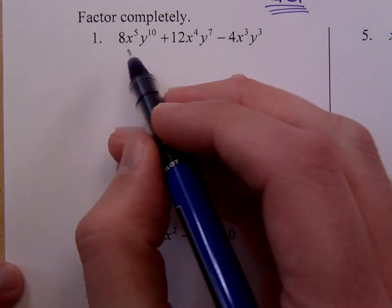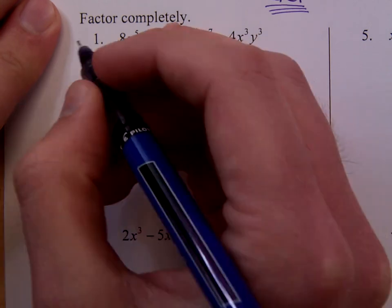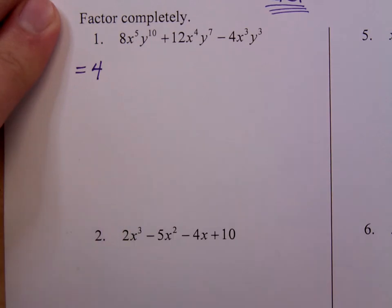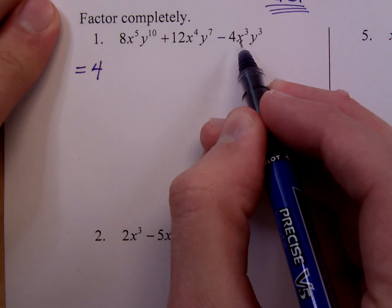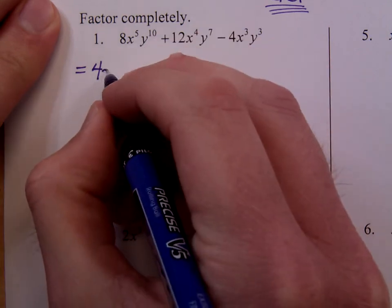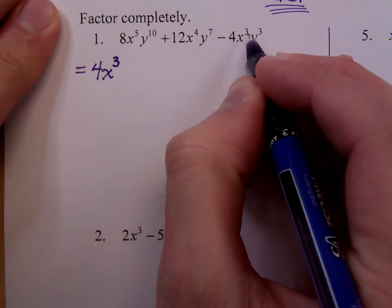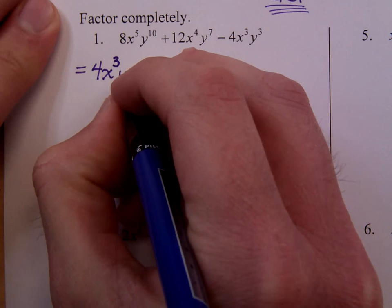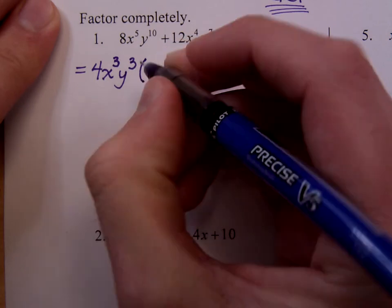In this first one, you look at all these three terms and what they have in common is a 4. So 4 can be factored out of all of these. You also notice that they all contain factors of x and the most that they contain, most that each of them contain is 3. It's going to be restricted by the one that has the smallest exponent. And the same thing is going to be true for the y's. Everybody has at least 3 factors. So if I factor that out, I'm going to see what is left over.